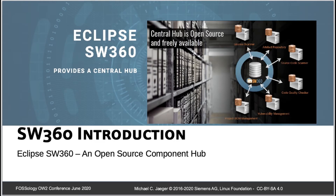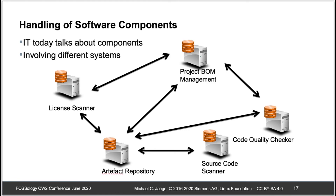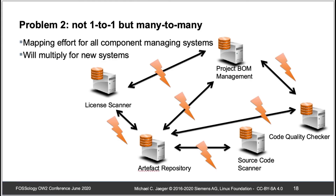SW360 is an open source component hub. It came from the idea that in a larger organization you have multiple systems dealing with software components — license scanners, artifact repositories, project bill of material management, code quality checking, source code scanning. All these applications deal with software components, and you would like to integrate these different systems. When integrating them, you write adapters, and the likely problem is that mapping of software component naming becomes necessary.